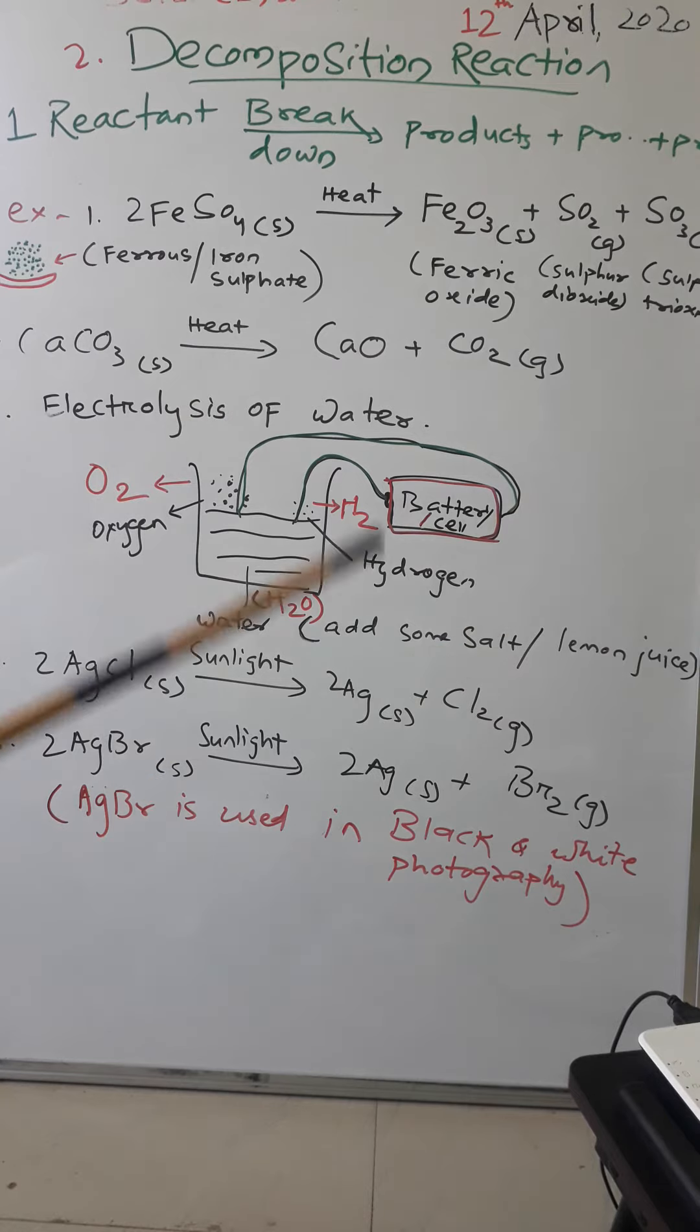In your book some other examples are also there which I have shortly described. That is number two, calcium carbonate, which is a solid or which is also called limestone. When you heat it, it gives us calcium oxide or quicklime plus carbon dioxide gas.